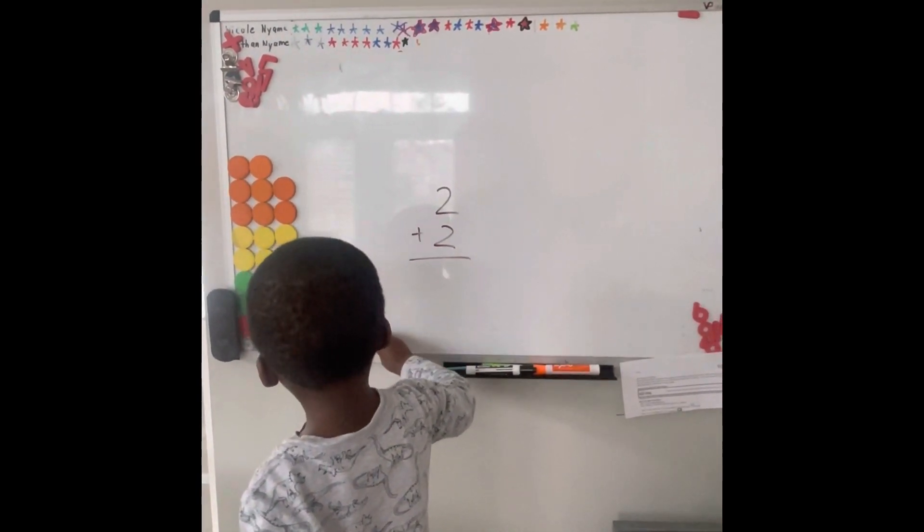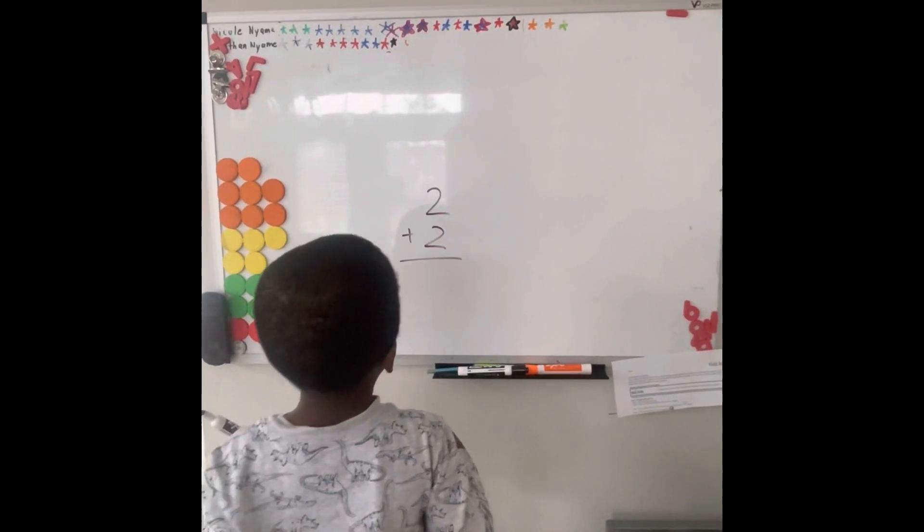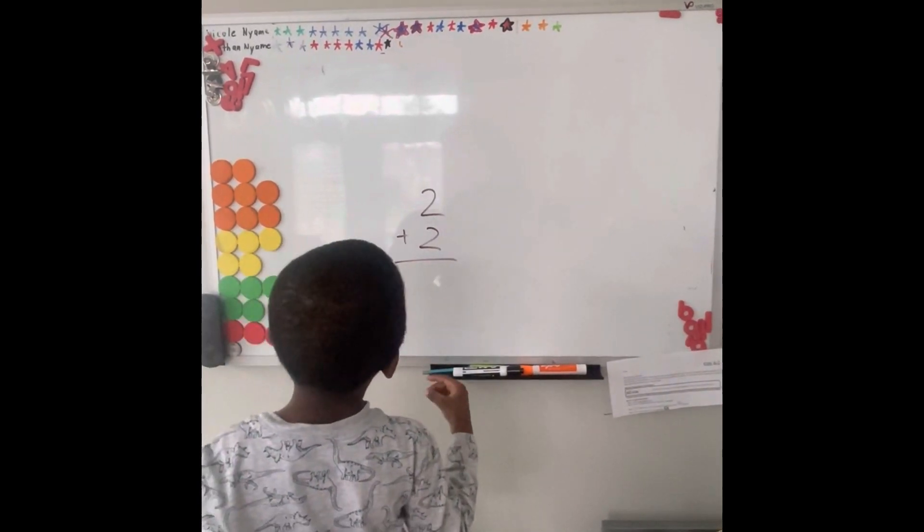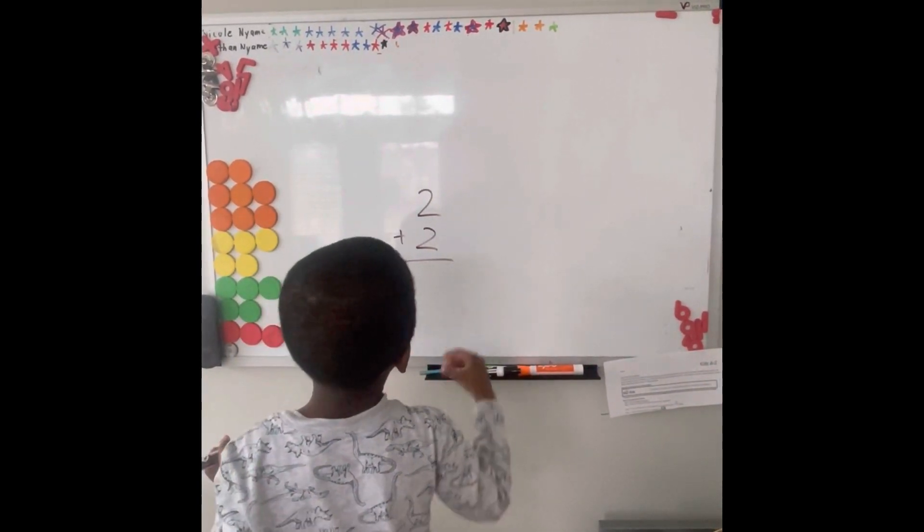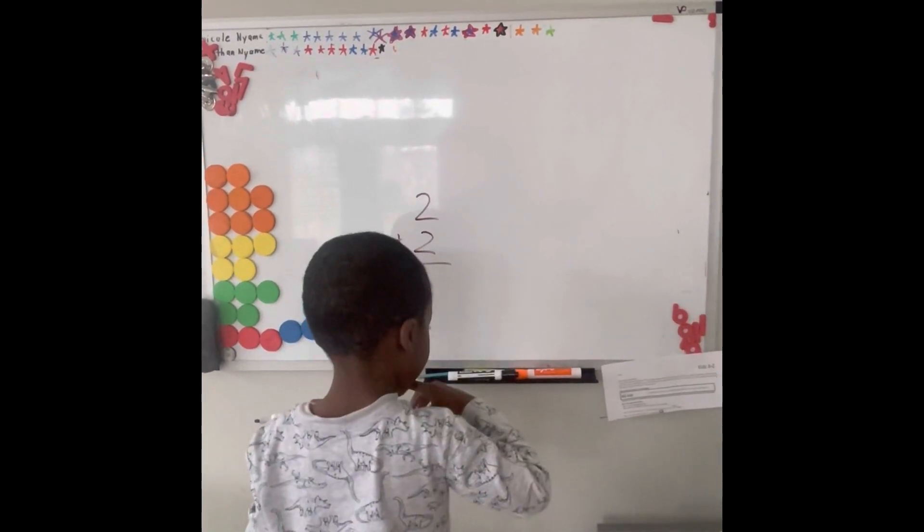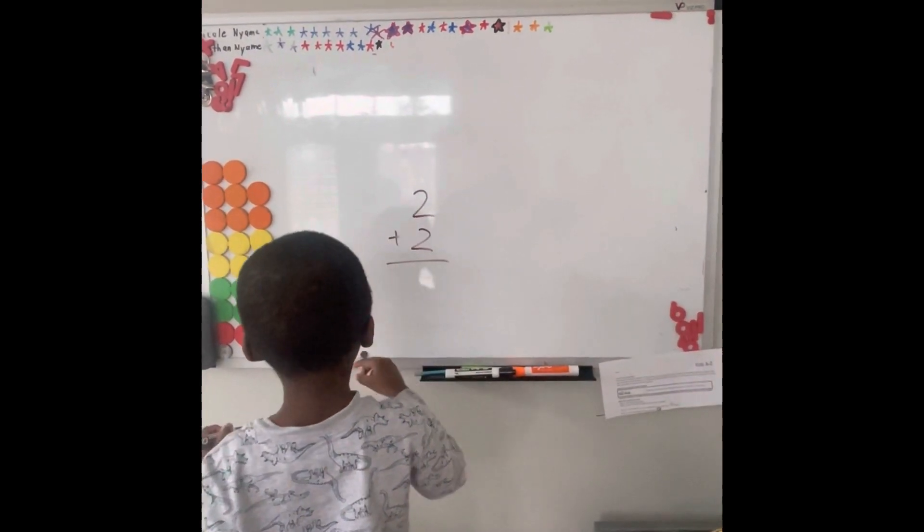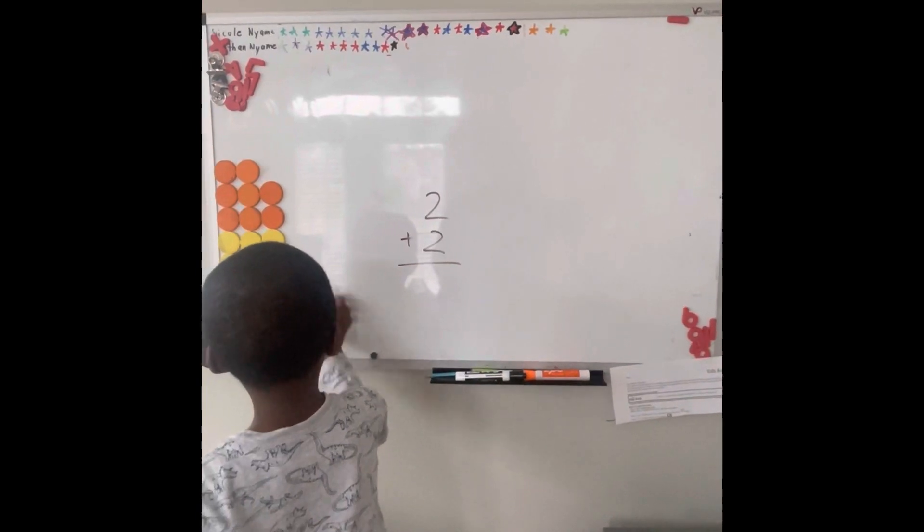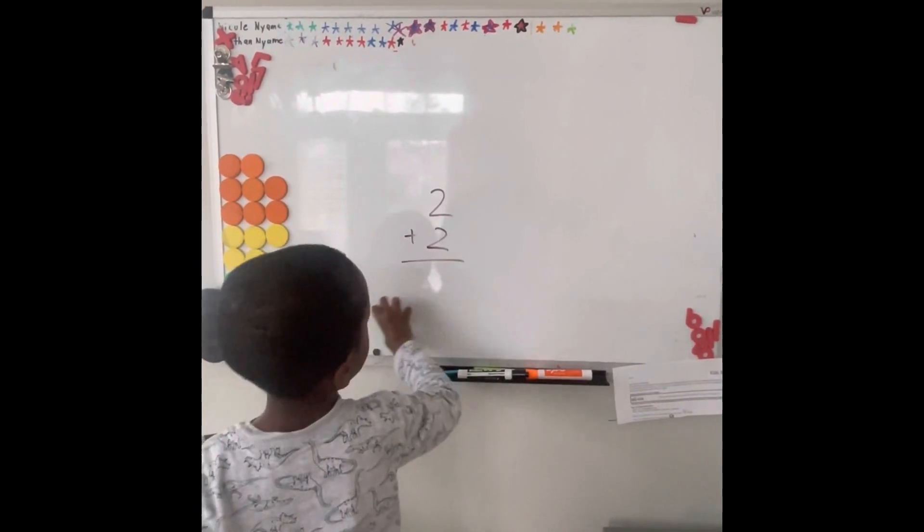My son here is going to demonstrate it. All right, go for it. Read the problem. Two plus two. All right, what's two plus two? Four. Okay, four. So you can see he understands his math facts, but this is how you actually do it.